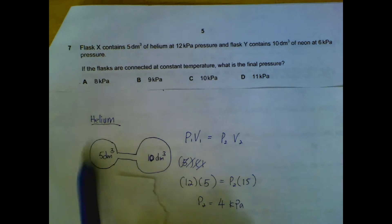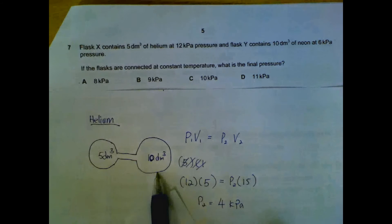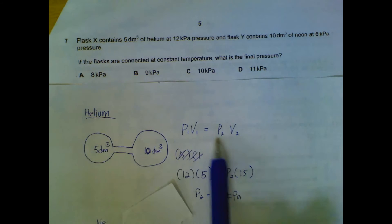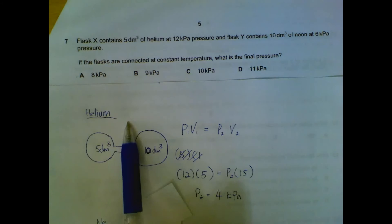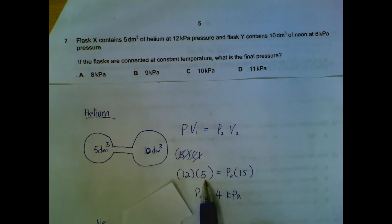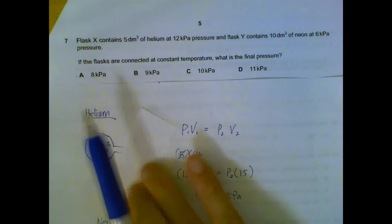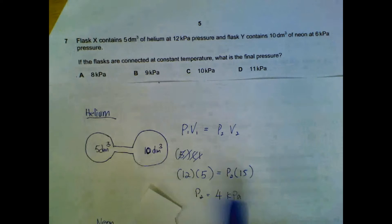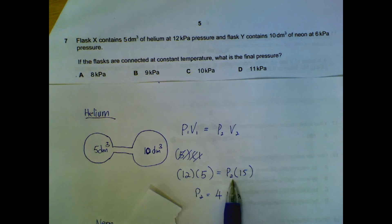So what we have to do is use this equation: P1V1 at the start equals to P2V2 at the end, just for helium alone. So 12 times 5, which is the amount at the start. We don't know the pressure at the end, but we know that the volume at the end for helium is 15. So this is the only unknown. We work out that the new pressure or the final pressure of helium is 4 kilopascals.